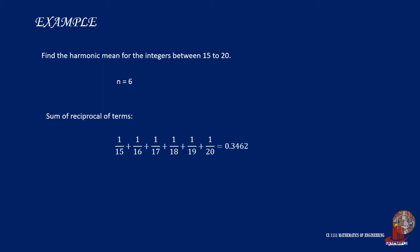Find the harmonic means for integers between 15 to 20. Checking the number of integers from 15, 16, 17 until 20, there are six terms. And taking the sum of their reciprocals, 1/15 plus 1/16, and so on, we get 0.3462. By using the formula for harmonic mean, which is the number of terms over the sum of the reciprocals of the terms, we get 17.33.